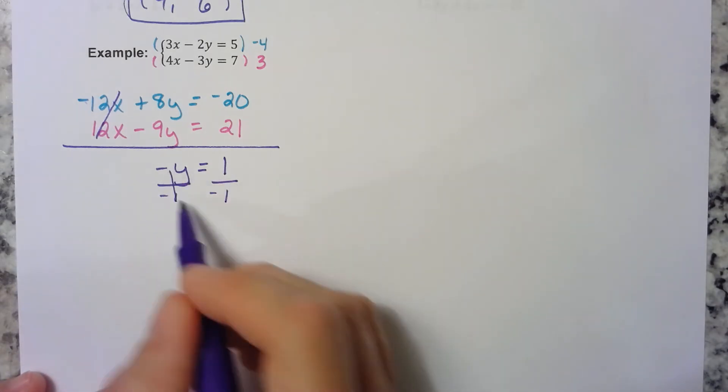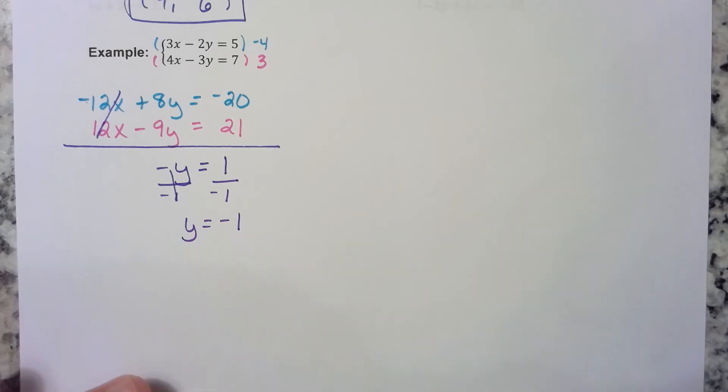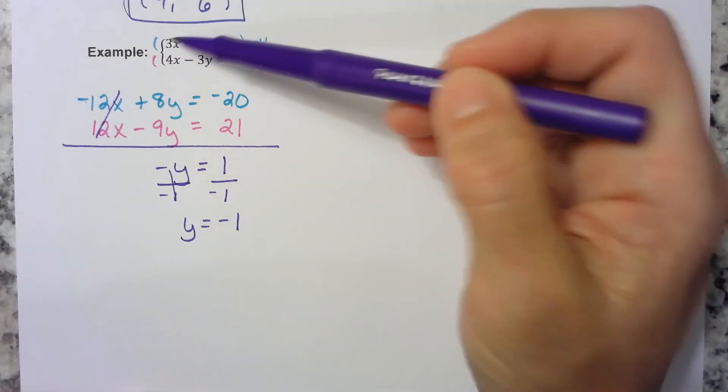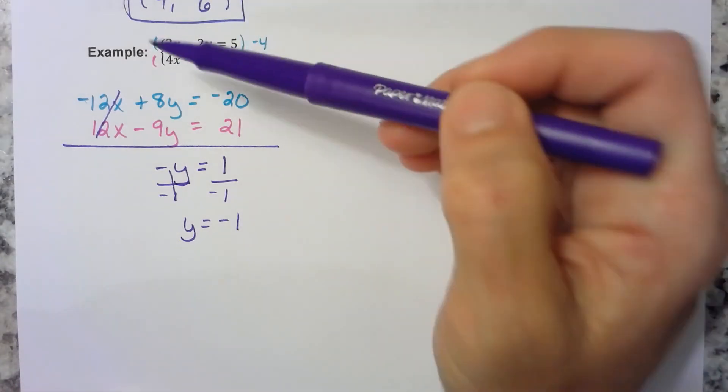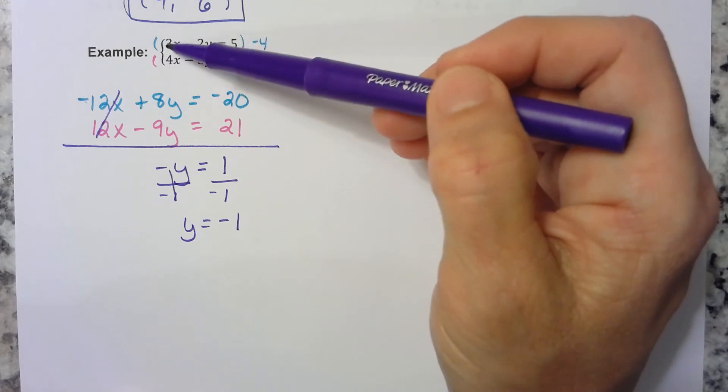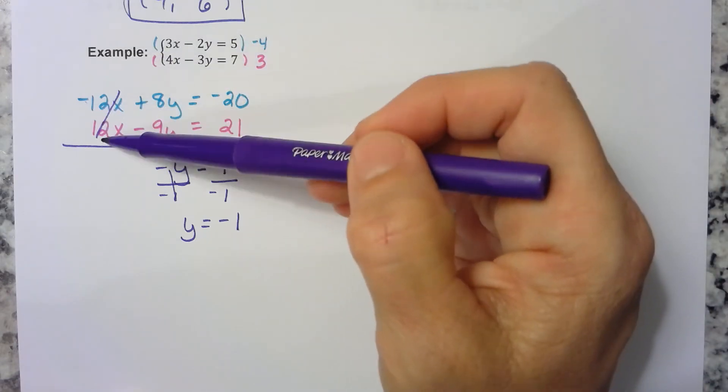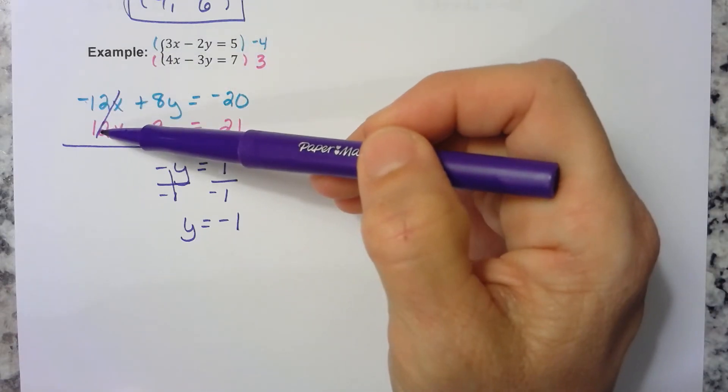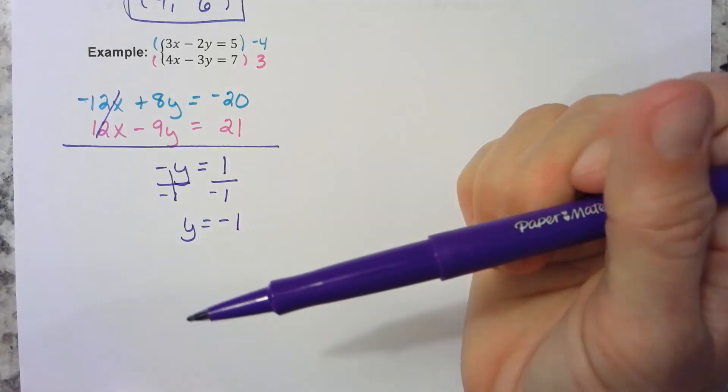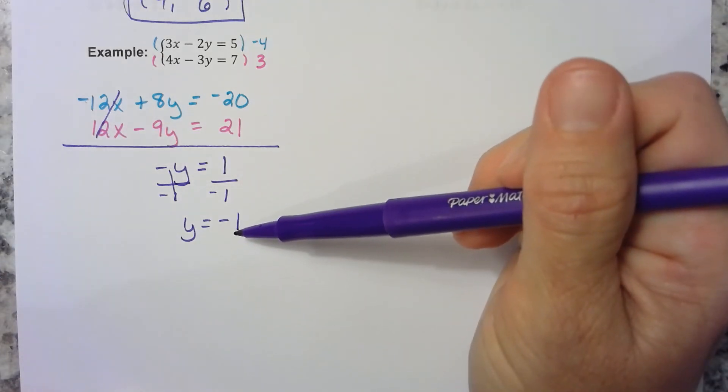Divide both sides by negative 1. So we get y equals negative 1. So how do we do this again? Remember, we want to choose some numbers to multiply by so that our coefficients are opposites. In this case, they're both 12, but one's negative and one's positive. Okay, so now we know y. We need to find x.